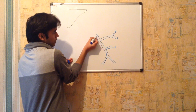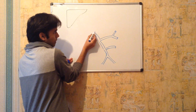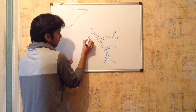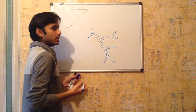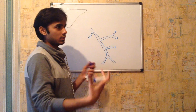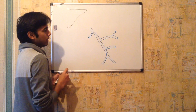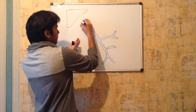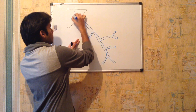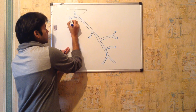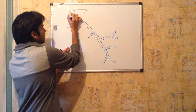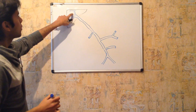As the portal vein continues upward, it receives one more vein from the pyloric part of the stomach. The stomach contains three parts: the fundic part, the cardiac part, and the pyloric part. Blood from the pyloric part is received by the pyloric vein, which drains into the portal vein. The portal vein then enters the liver and divides into a number of minute branches — a dichotomous type of branching — finally draining throughout the liver.